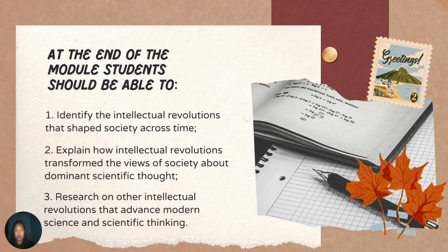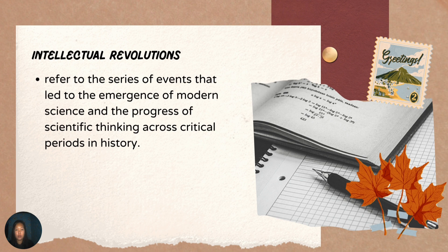So in the study of history of science and technology, another important area of interest involves the various intellectual revolutions across time. Interest lies in how intellectual revolutions emerge as a result of the interaction of science and technology and of society. It also covers how intellectual revolutions altered the way modern science was understood and approached. So for this discussion, intellectual revolutions should not be confused with the pre-Socratic speculations about the behavior of the universe.